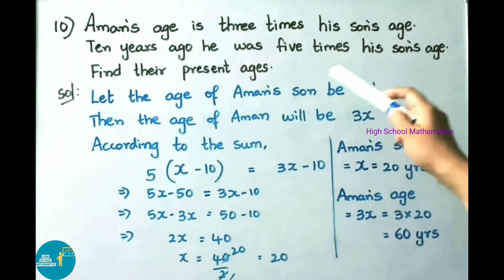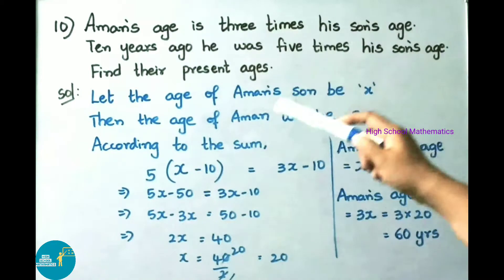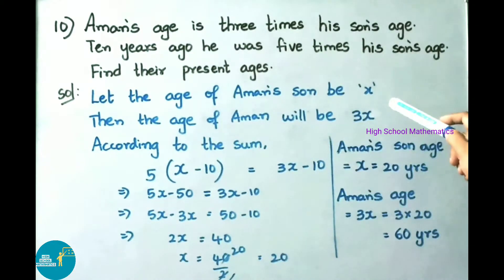See now question number 10. Aman's age is 3 times his son's age. 10 years ago, he was 5 times his son's age. Find their present ages.